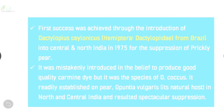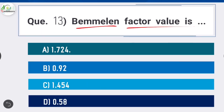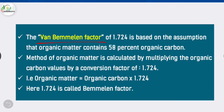Question 13: The van Bemmelen factor value is — option A is correct: 1.724. The van Bemmelen factor of 1.724 is based on the assumption that organic matter contains 58 percent organic carbon. Organic matter is calculated by multiplying the organic carbon values by the conversion factor of 1.724: Organic Matter = Organic Carbon × 1.724. Here, 1.724 is called the Bemmelen factor.